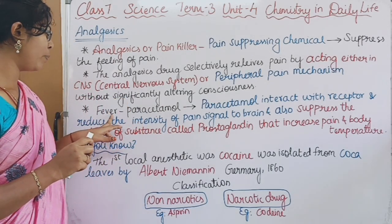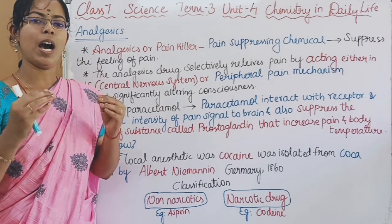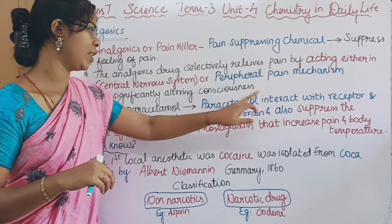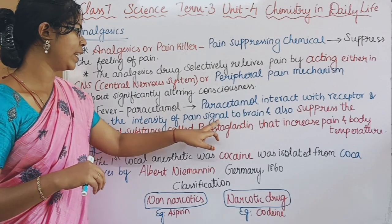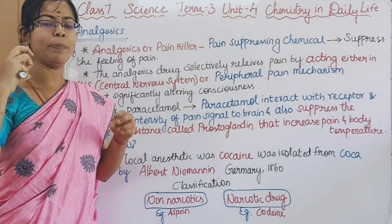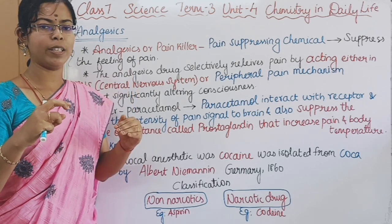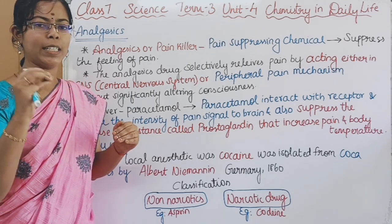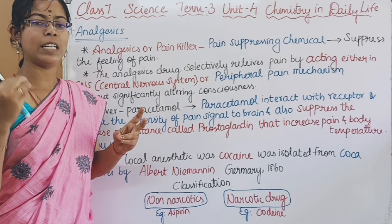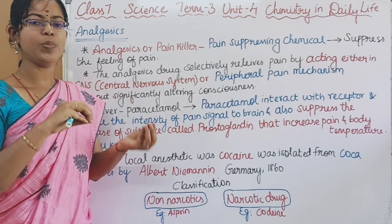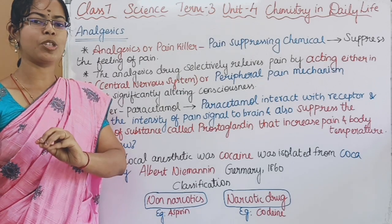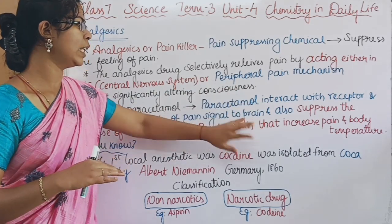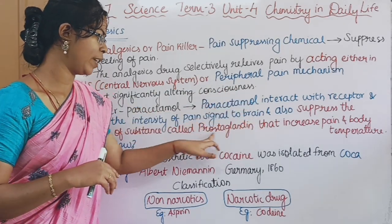If we have fever, we take a paracetamol tablet. The paracetamol tablet will interact with the receptor and reduce the intensity of pain signals to the brain. Also, a substance called prostaglandin is released in the body. Prostaglandin increases the body temperature and body pain. Paracetamol works by suppressing the release of prostaglandin.